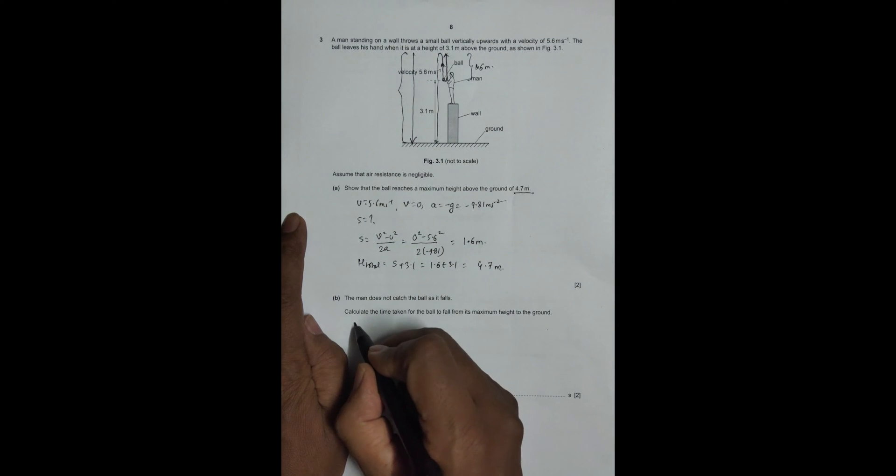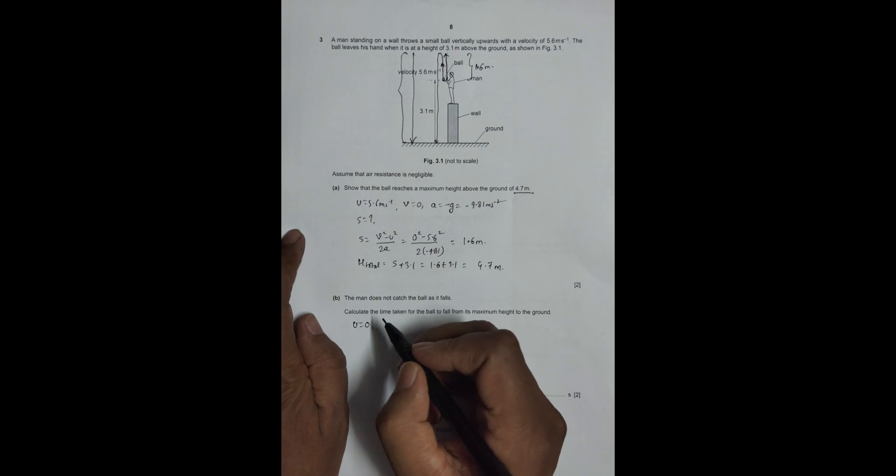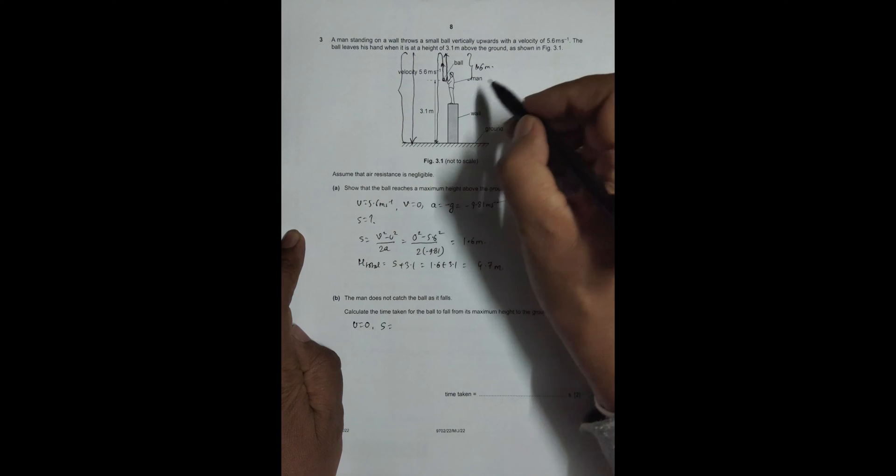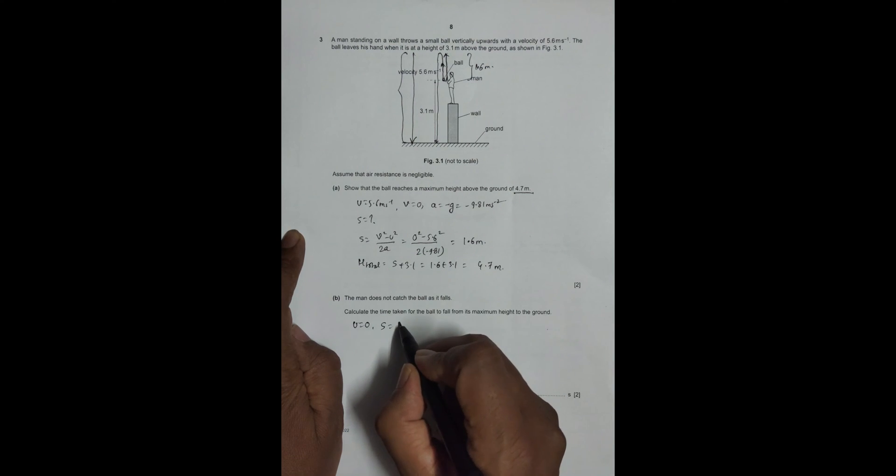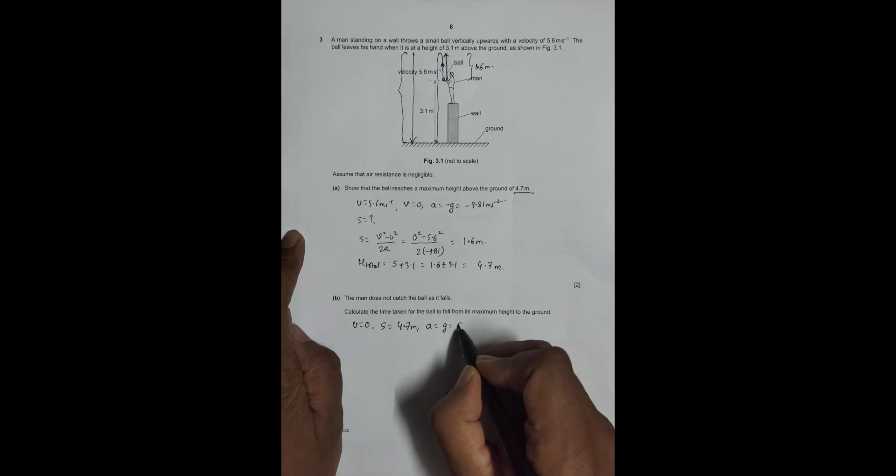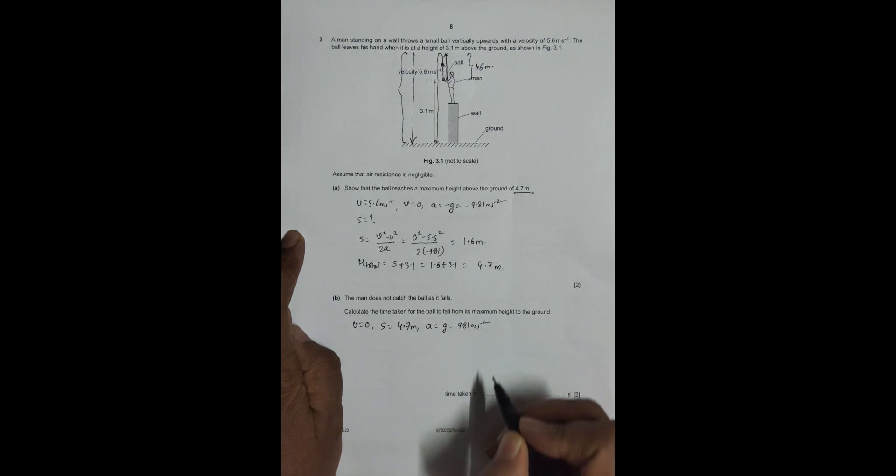For this motion, we have u equal to 0 for this motion only. s is equal to, from here to here, 4.7 meters, which we just got. And the value of a is equal to g, which is equal to 9.81 meters per second squared.